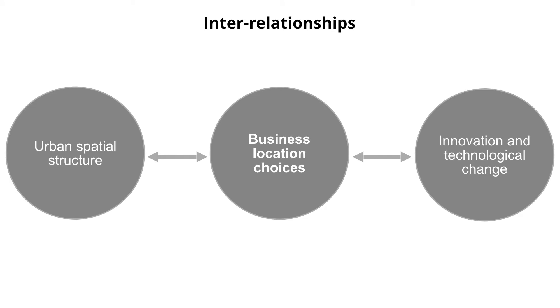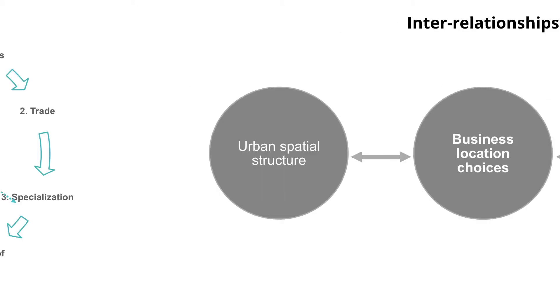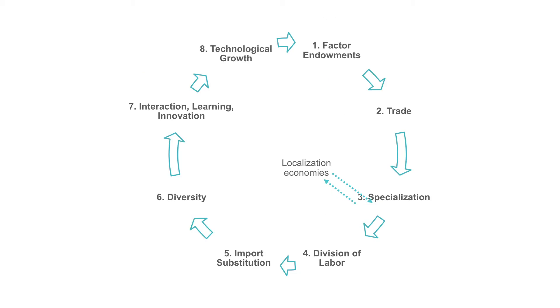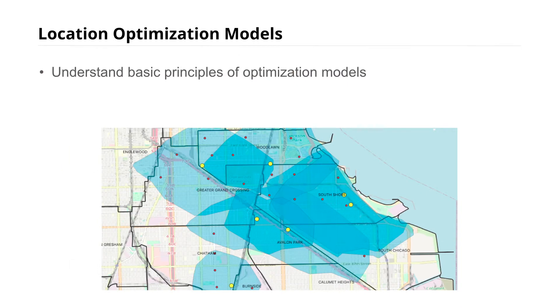This course builds on the first course in this location analysis sequence by applying the theoretical concepts we discussed in classical location theory, and also providing the conceptual foundation for future courses in this sequence in which we'll cover more advanced types of optimization models. Today, I'll introduce you to the basic principles of optimization models, provide examples for the application of these models, and allow you to apply that knowledge in the context of a point-based location optimization problem. By the end of this course, you'll understand the basic principles of optimization models to be able to solve this simple point-based optimization problem for manufacturing plant location, and map the results in open-source GIS software.